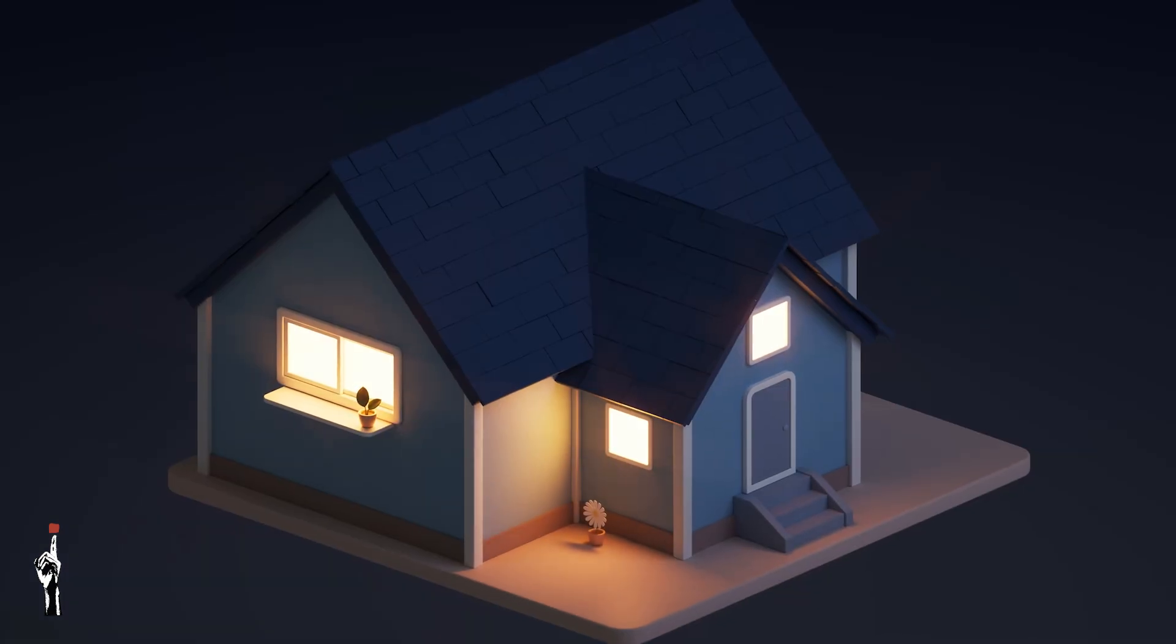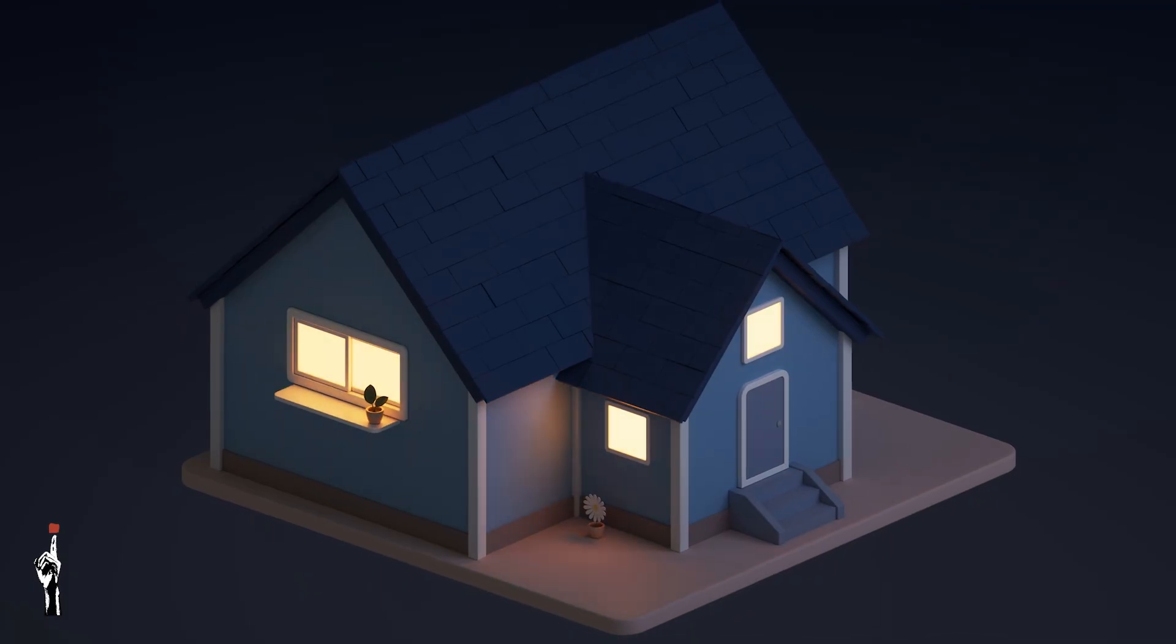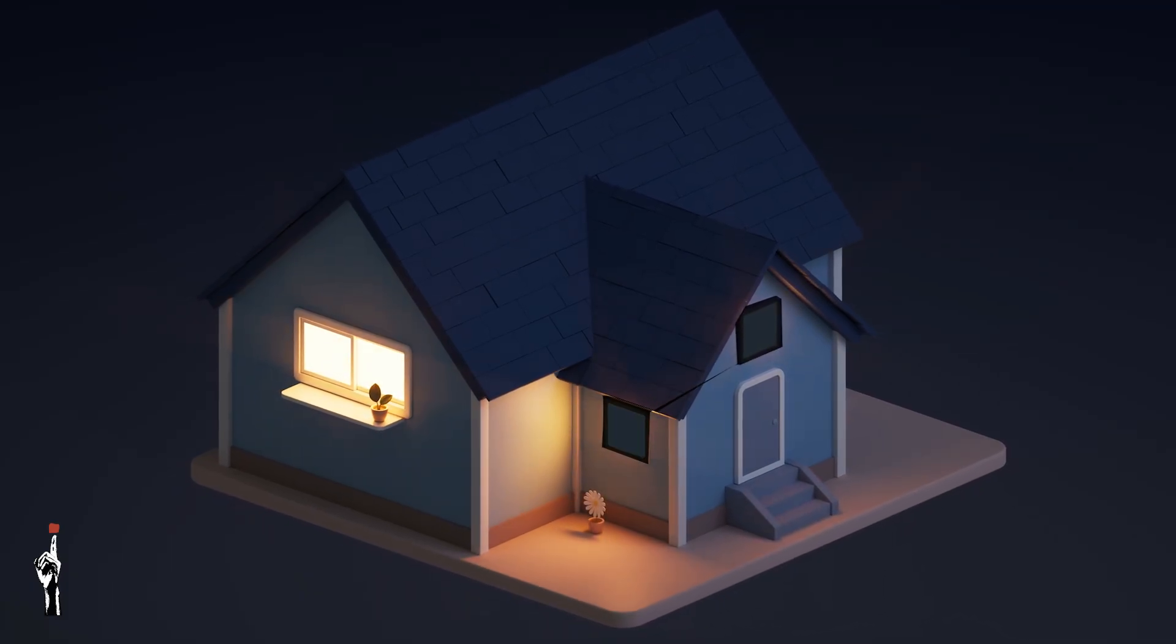For example, a home is wired in parallel. When your bedroom light goes off, the kitchen lights stay on.